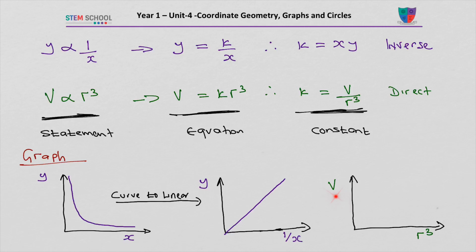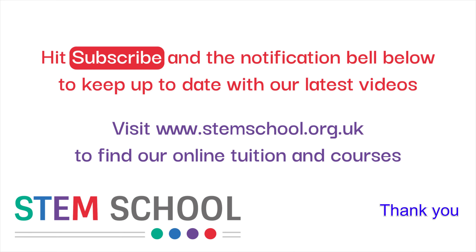What kind of graph do we get if we plot v against r³? Since v is directly proportional to r³, we get a straight line through the origin. If the graph does not pass through the origin, it is not direct proportionality, because it would be going through a constant. We'll see you next time.